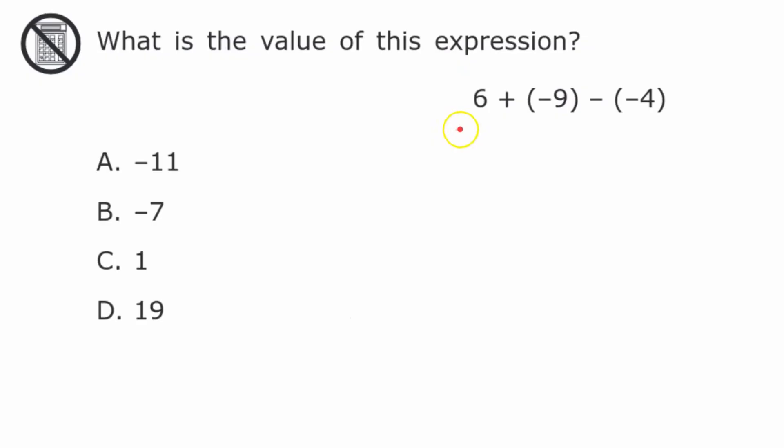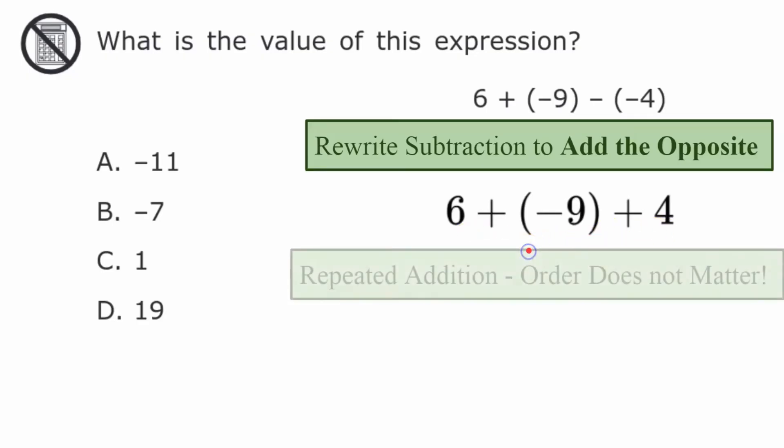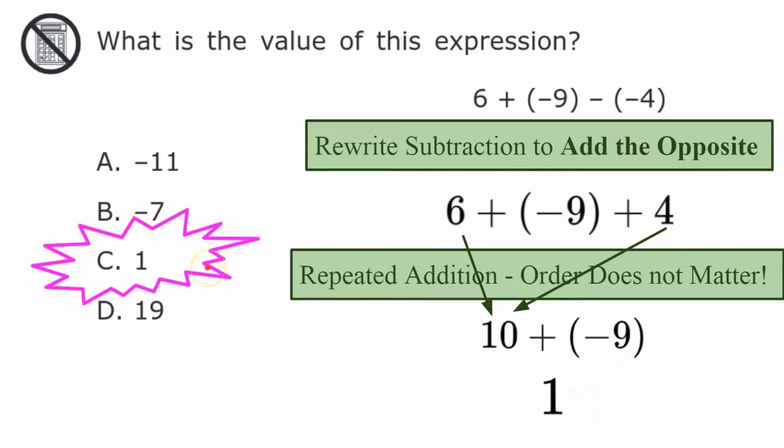What is the value of this expression? Six plus negative nine subtract negative four. Please pause and come back when you're ready. Welcome back. First I'm going to rewrite subtraction to add the opposite. This is the rule that I teach my seventh grade students. So we're going to write six, add negative nine was given to us, but add the opposite, which is opposite of negative four is positive four. So writing subtract negative four is the same as add four. Now it's not so confusing and we have repeated addition, so order doesn't matter. I am going to add my positive values. Six plus four is ten and now I need to add the negative nine. Ten and negative nine is one, so the answer is c.